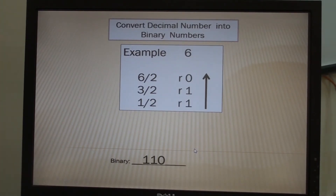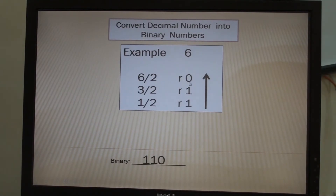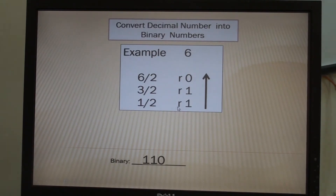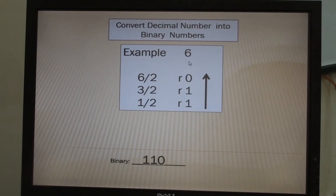Let us try to convert decimal number 6 into binary. 6 divided by 2 is 3, remainder 0. 3 divided by 2 is 1, remainder 1. But 1 divided by 2 is 0.5, so instead you write remainder 1. So 6 is equivalent to binary number 1, 1, 0. Remember, you write from below to the top: 1, 1, 0.